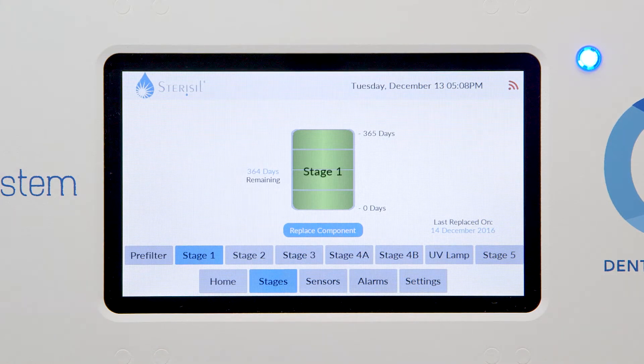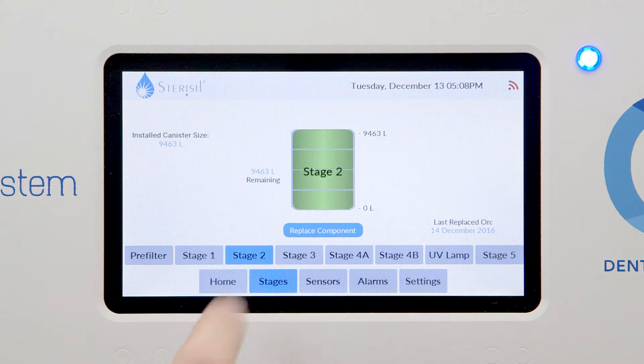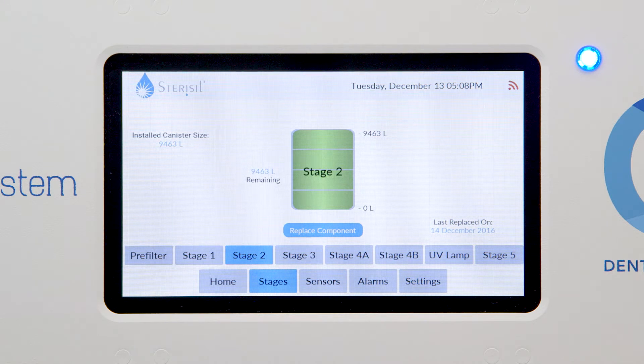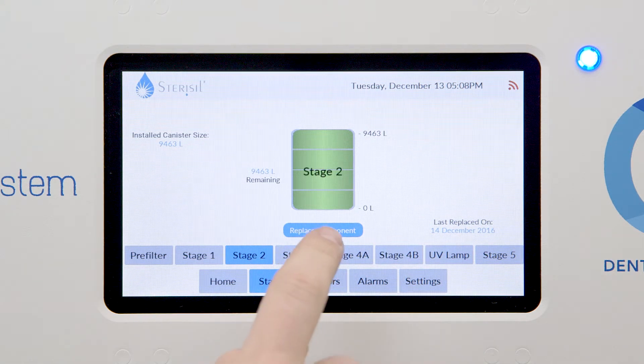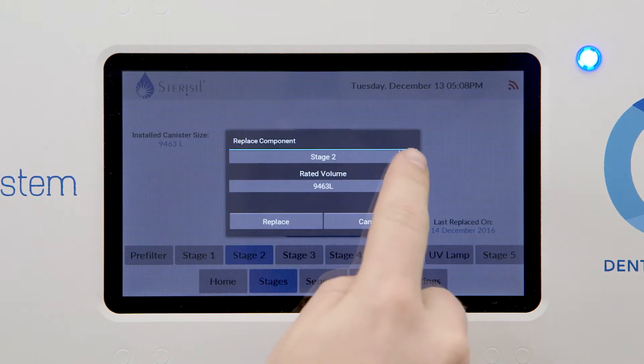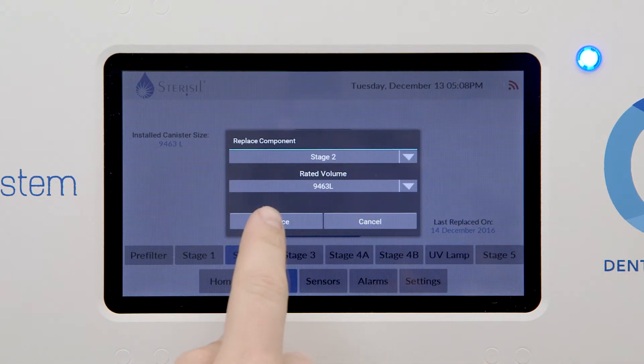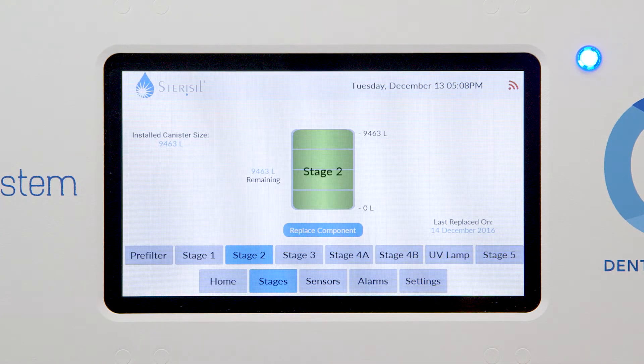Stage two's lifespan is based on liters processed and is effective up to 9,463 liters. If the counter is not reading 9,463 liters, you'll select replace component, choose stage two from the drop down menu, and touch replace.